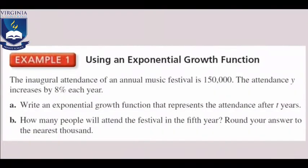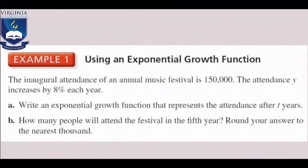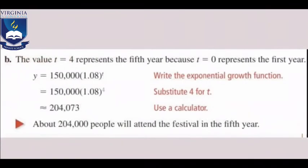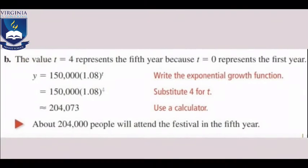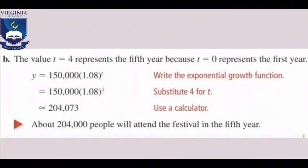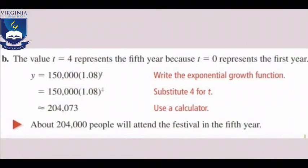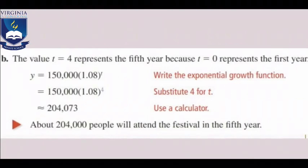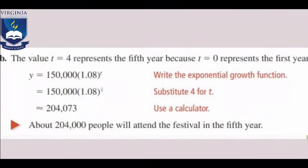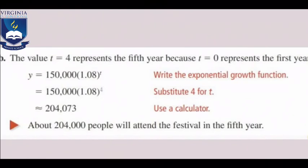Question b: how many people will attend the festival in the fifth year? Round your answer to the nearest thousand. The value t equals 4, which represents the fifth year, because t equals zero represents the first year. So we're going to write the exponential growth function as we did in part a. Then we're going to substitute 4 for t. We're going to use a calculator to help us find the answer. About 204,000 people will attend the festival in the fifth year.